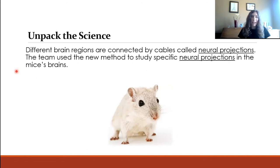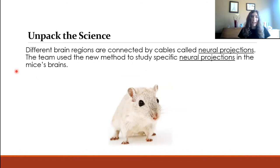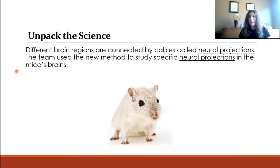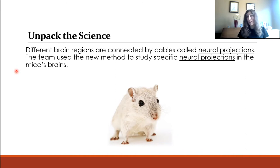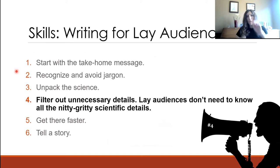I was editing a student's piece where she wrote 'different brain regions are connected by cables called neural projections.' After two rounds of asking her to explain what a neural projection is, she finally said she didn't know — that's just the term the scientist used. You don't get to stick a term in your story and assume your reader will understand it if you don't understand it yourself. It turned out she was just talking about axons. You really have to unpack the science — it's work.